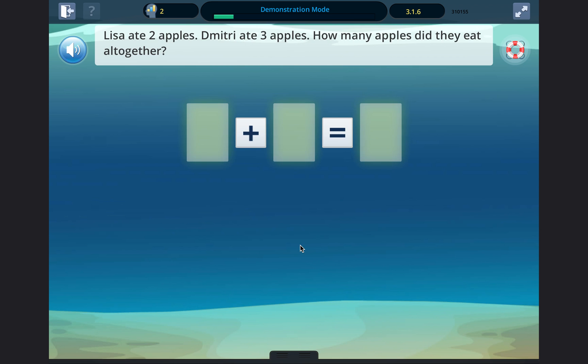Create a number sentence that matches the story. Lisa ate two apples. Dimitri ate three apples. How many apples did they eat all together?